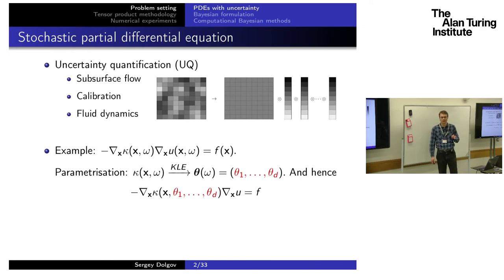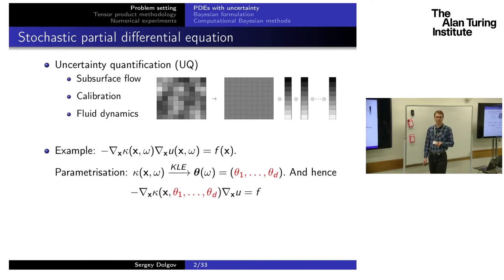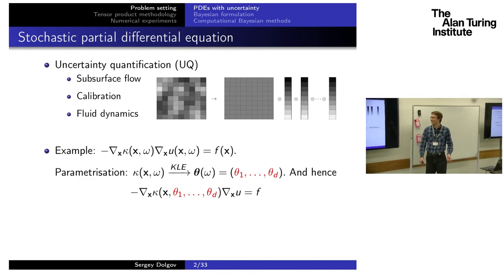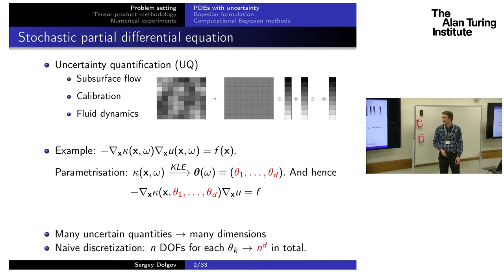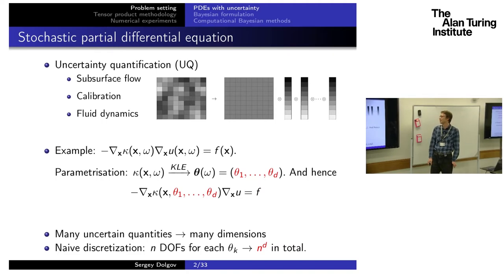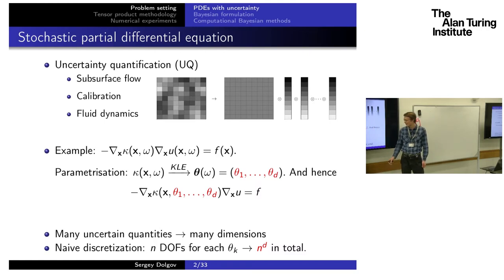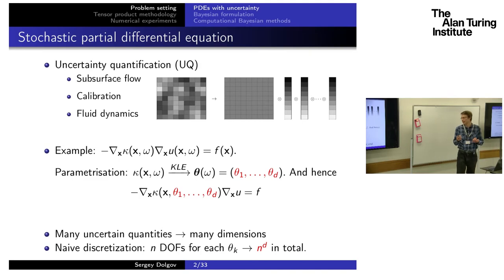In principle, you can have deterministic parameters from the very beginning — as Albert Cohen presented in the morning, you can have something like uncertain shapes in your domain. And as we heard many times today, our main enemy is the curse of dimensionality, because if you do a naive discretization in all these variables, we will end up with exponentially many points, and of course we would like to avoid this.